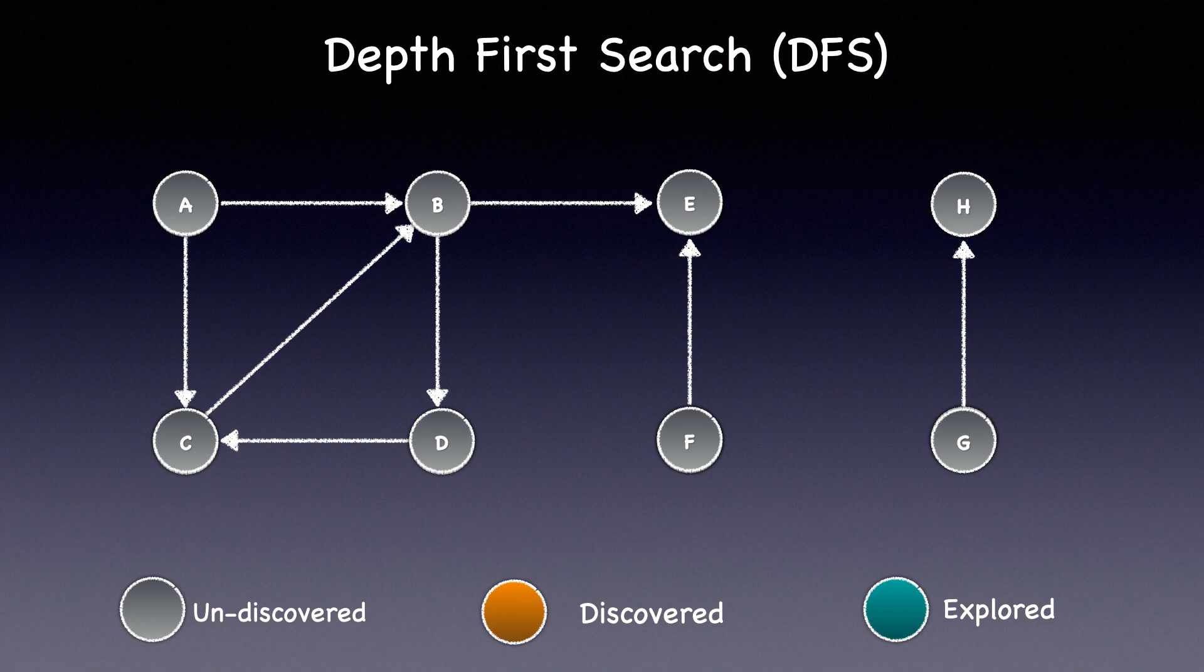We'll start with node A. Node A is now discovered so we'll change the color to orange. It has two neighbors B and C. We could navigate to either one of them so let's pick node B. From node B we could go to either node D or E. So we'll select node D and then from node D we will traverse to node C. Now from node C we can traverse to node B but node B is already discovered so we do not navigate to it. I'm going to change the arrow to a dotted line to indicate that we are skipping it.